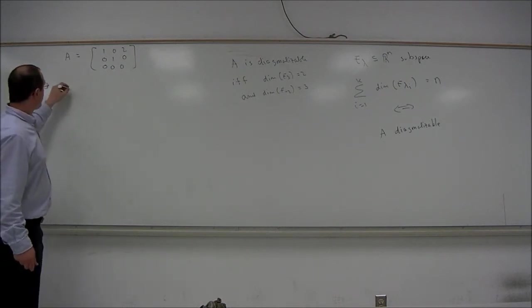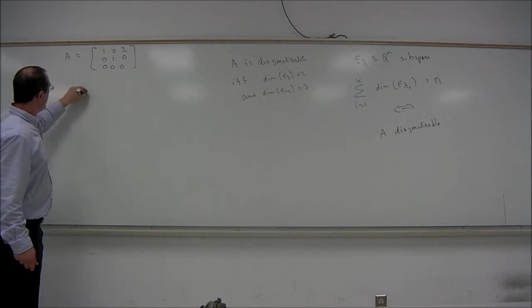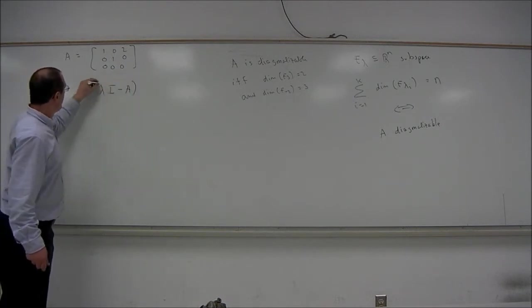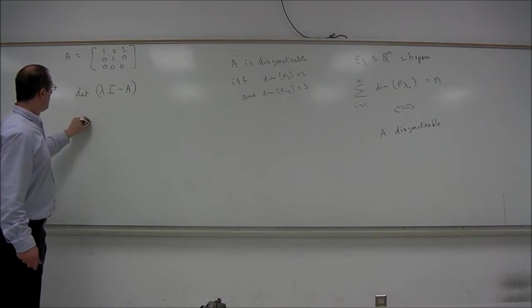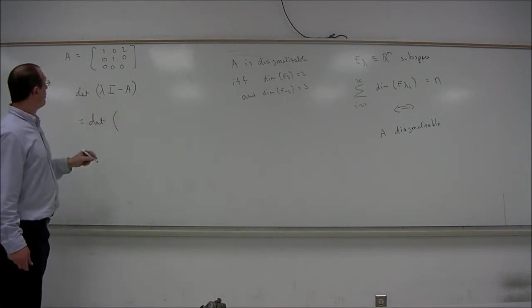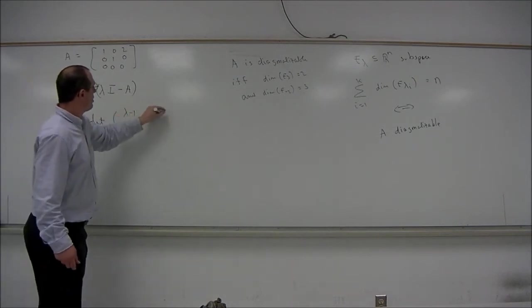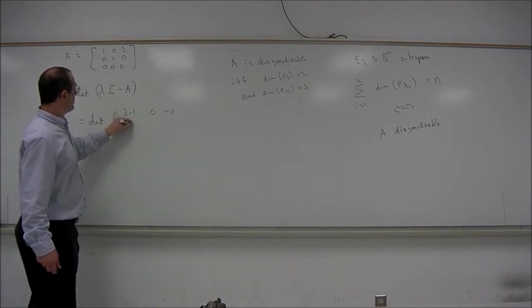So first we find the characteristic polynomial by looking at the determinant of lambda I minus A. So that's going to equal the determinant of the matrix lambda I minus A, which is going to be lambda minus 1, 0, negative 2,